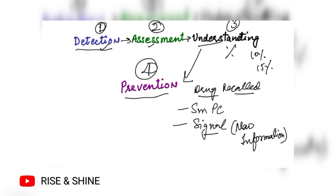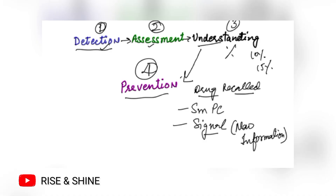Another preventive measure is that the SmPC will get updated, or there will be information sent to the doctors and physicians treating patients. A signal is any new information coming in — so they have to communicate that, for example, because of this drug, heart stroke may be a risk, and the physician has to manage accordingly. So there are four steps: first, identify which side effects are occurring; second, assess their significance; third, understand frequency and risk; fourth, prevent through appropriate action.